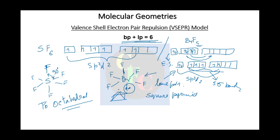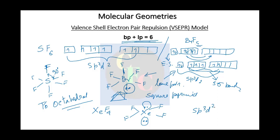When the next lone pair enters — as in XeF4 — you have the choice of placing it at 90 degrees or 180 degrees from the first lone pair. By previous reasoning, the second lone pair goes 180 degrees away from the first, giving a square planar structure. The example is XeF4, and the hybridization is still sp3d2.